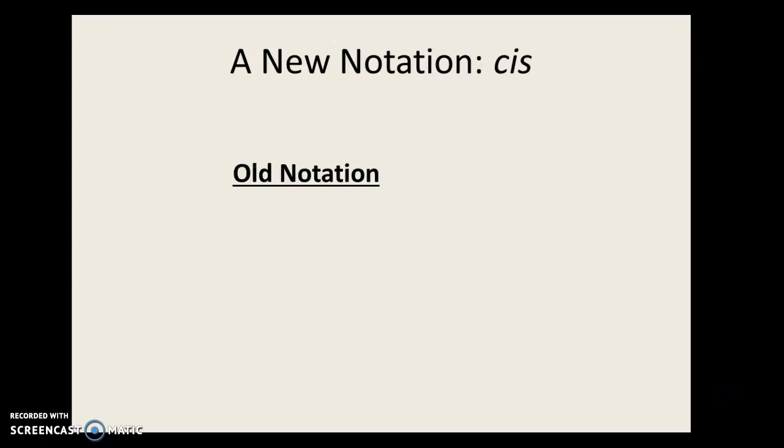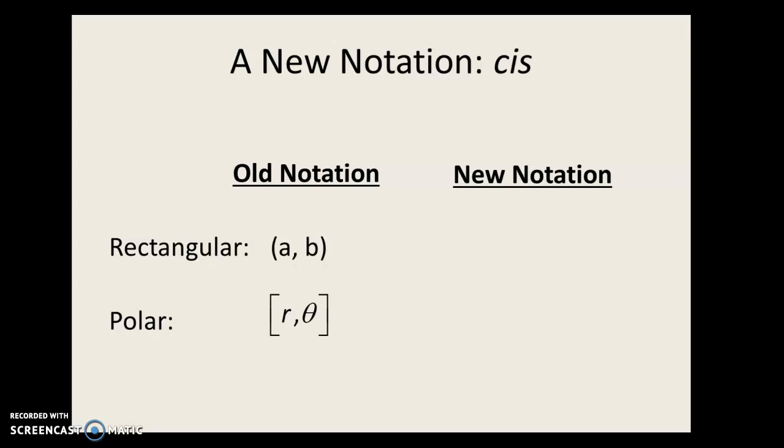So first of all, what was our old notation? Our old notation represented rectangular points as (a,b), like a point, and polar points as [r,θ]. We want to modify that now. We want to use some new notation. The new rectangular notation you are already familiar with, a + bi. That means a complex number, a two-dimensional number, and this is the real part, and this is the imaginary part.